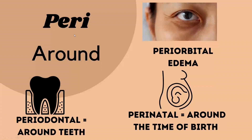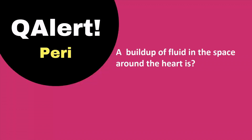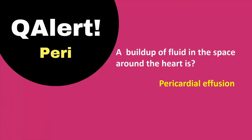Next, prefix peri refers to around. Examples: periodontal means around the teeth, periorbital edema is swelling around the eyes, perinatal means around the time of birth. Question alert for peri: the buildup of fluid in the space around the heart is pericardial effusion. Next, supra prefix refers to above — example: supraventricular tachycardia, which is tachycardia occurring above the ventricles.